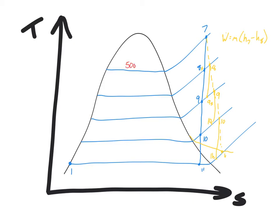I'll label the different pressures in red for record-keeping so you know where everything sits. At the top we have 5000 kilopascals, then 1900 kilopascals, 620 kilopascals, 140 kilopascals, and 20 kilopascals. That'll help make sure everything lines up correctly as I go through the system.